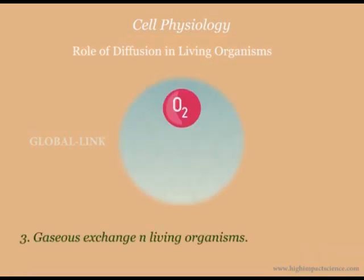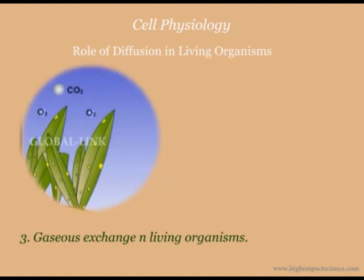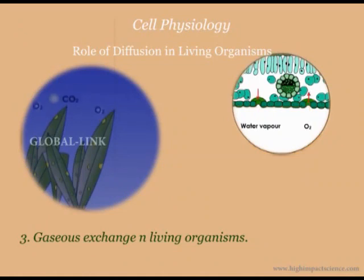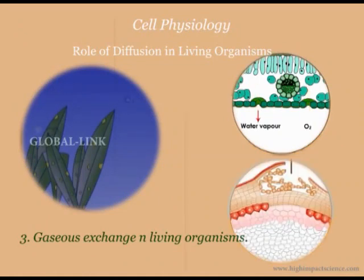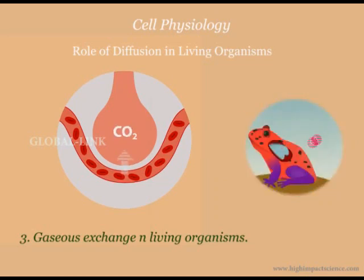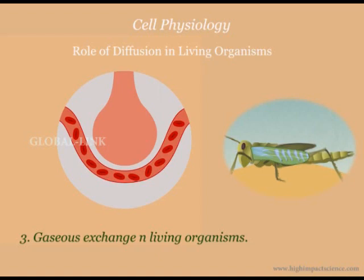Diffusion is also involved in gaseous exchange in both plants and animals. Plants take in carbon dioxide and give out oxygen in the presence of sunlight during photosynthesis. Some of the oxygen is used in respiration and the excess is given out. At night, only respiration takes place and therefore plants take in oxygen and give out carbon dioxide. These gases pass in and out of plants through the stomata in leaves and lenticels in stems by diffusion. In animals, several structures are used as surfaces for gaseous exchange through diffusion, including gills, skin, the tracheal system, and the lungs.